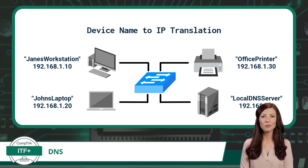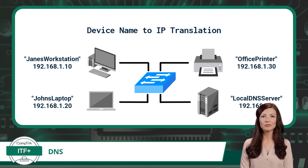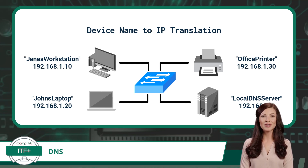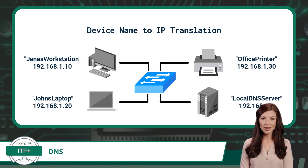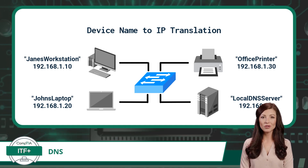For example, a printer might be named 'Office Printer' or a laptop might be named 'John's Laptop.' When devices on the local network need to communicate, they can use these friendly names instead of IP addresses. The local DNS server — often provided by the router or a network server — maintains a database of these device names and their corresponding IP addresses.